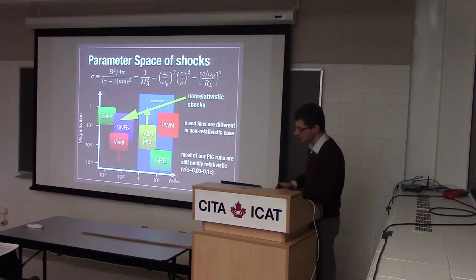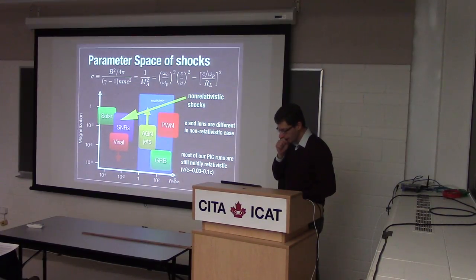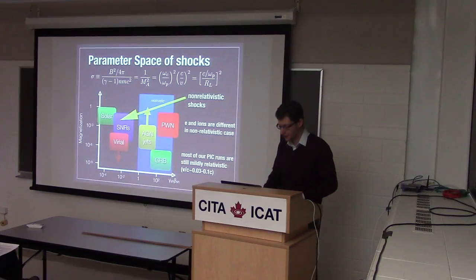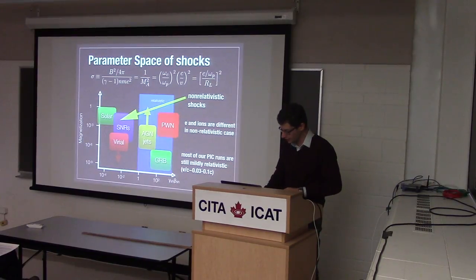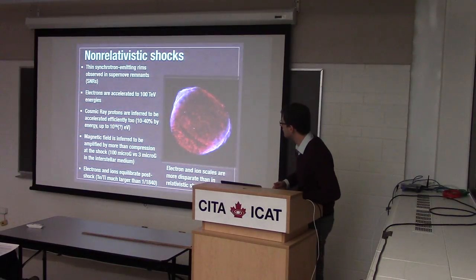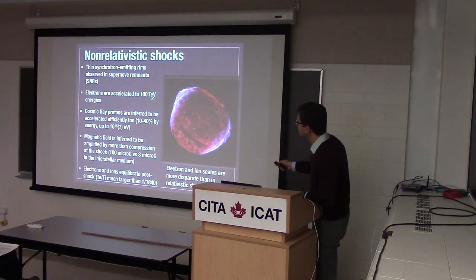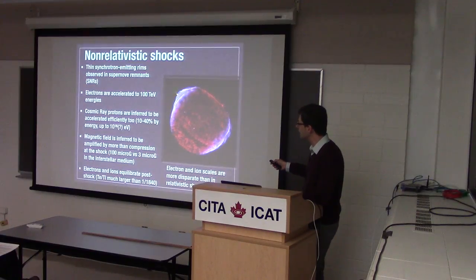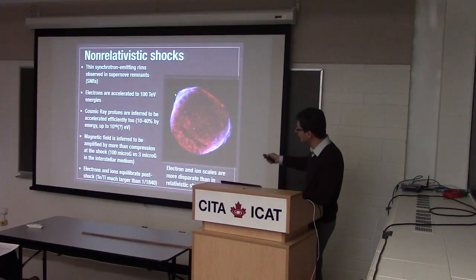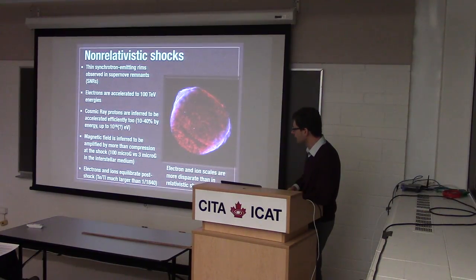Now let's talk about non-relativistic shocks. We have observational constraints on how much energy goes into cosmic rays — we expect about 10% of the energy of supernovae to go into cosmic rays. We see 100 TeV electrons accelerated in these shocks, and we can infer the magnetic field from the thickness of the rims.